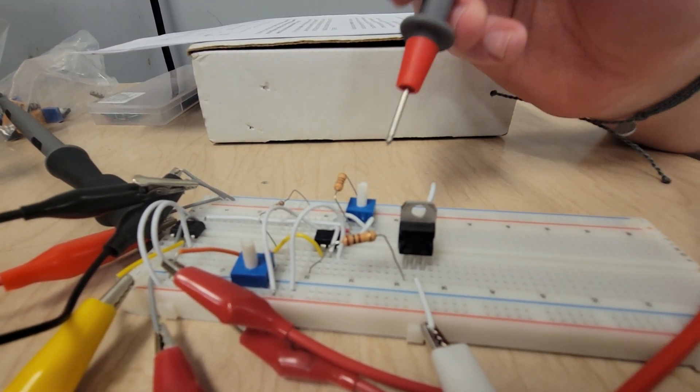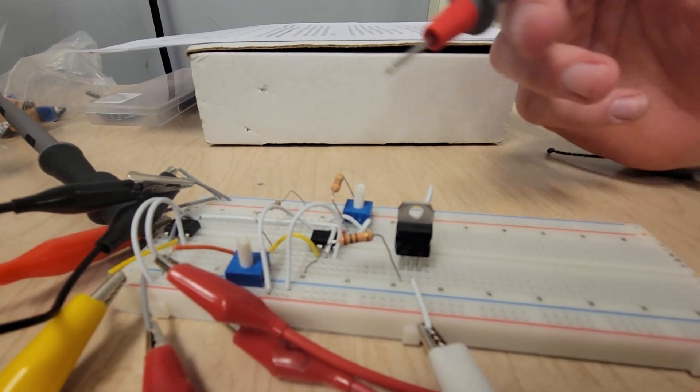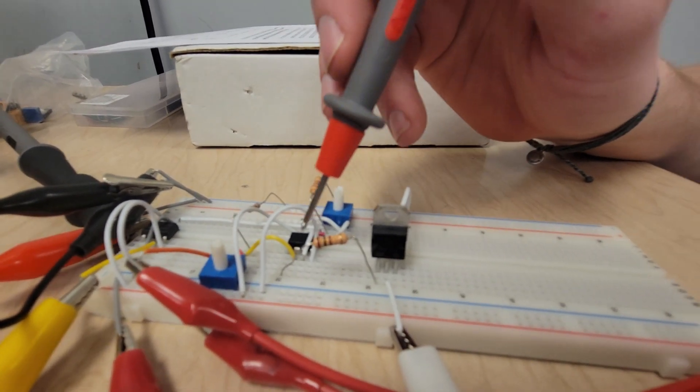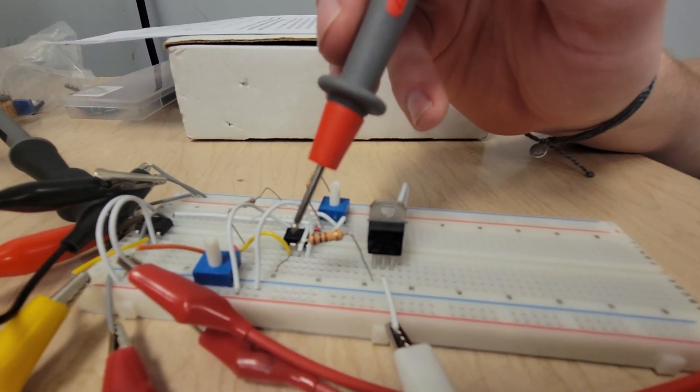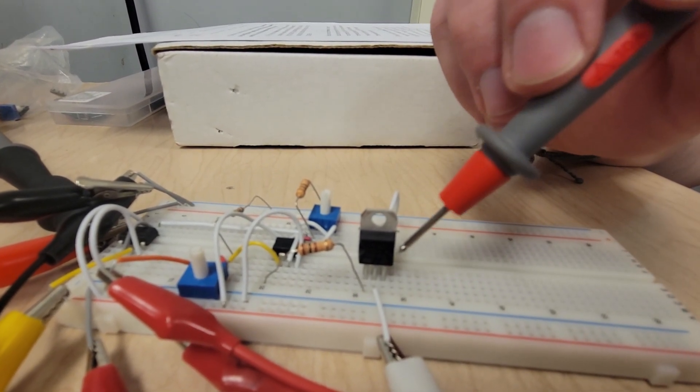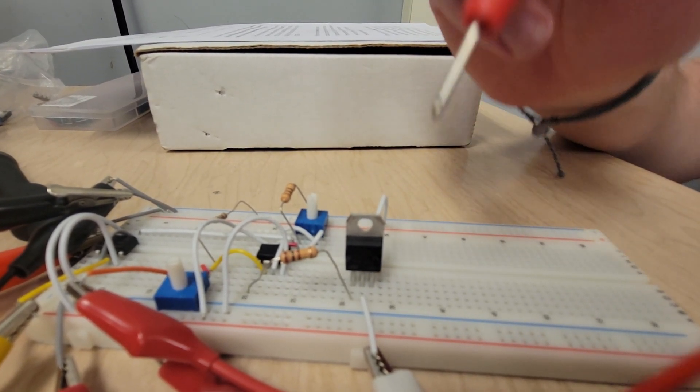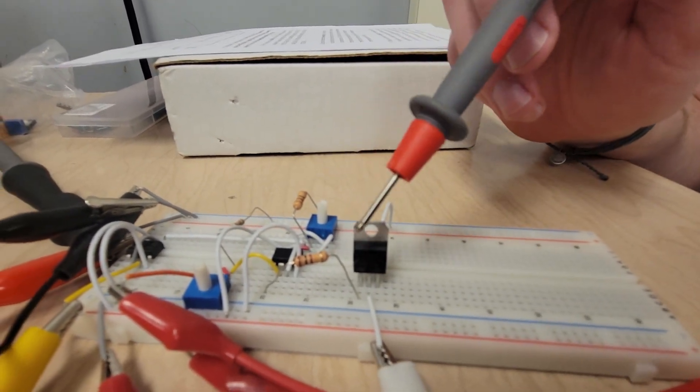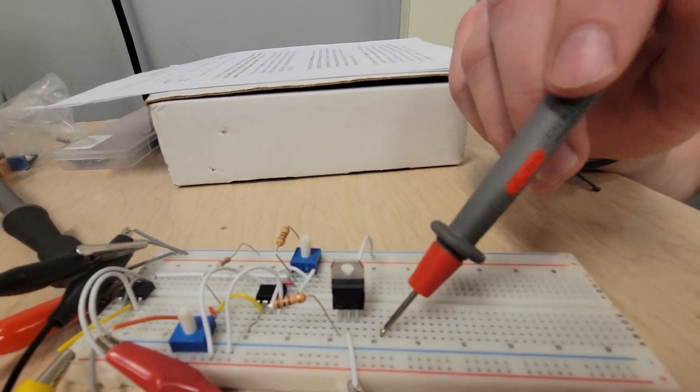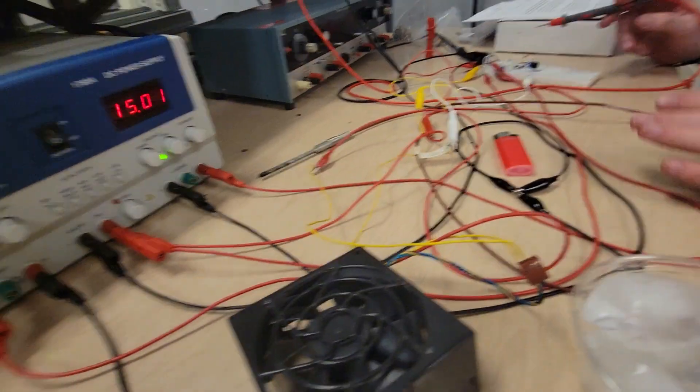then that will flip the op amp from outputting a negative voltage to a positive voltage. And that will put a positive voltage through the base of the Darlington pair transistor, and that will allow current to flow from the collector to emitter.